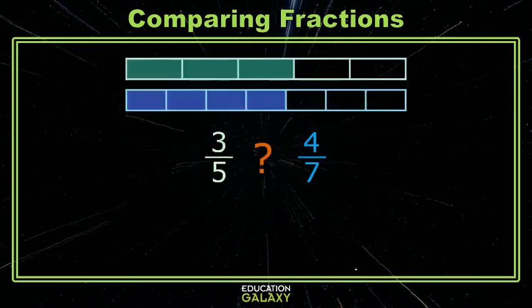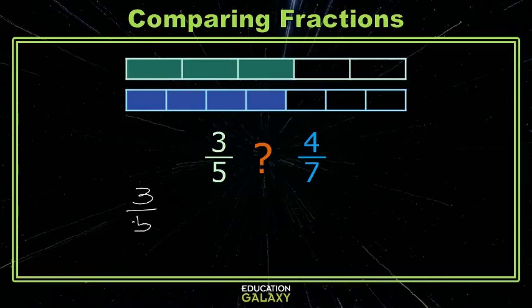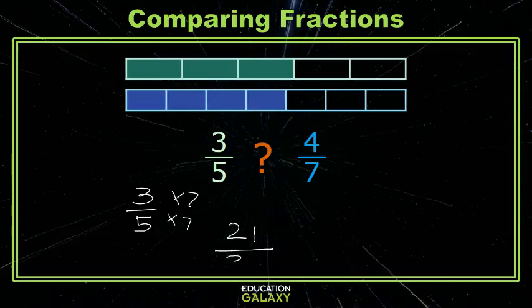Comparing 3 fifths and 4 sevenths, the best bet here for a common denominator is the product of 5 and 7, which is 35. Let's go ahead and create those common denominators. We'll take 3 fifths, multiply the numerator and the denominator by 7. This gives me the fraction 21 thirty-fifths.